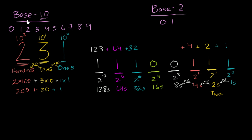We're all familiar with the base 10 number system, often called the decimal number system, where we have 10 digits: zero, one, two, three, four, five, six, seven, eight, nine.